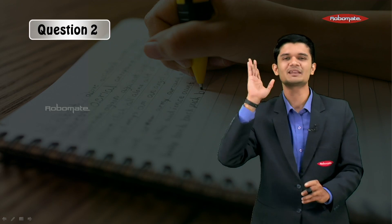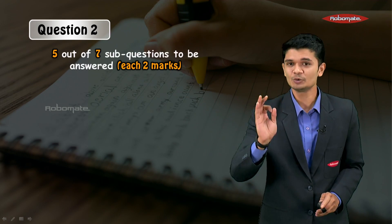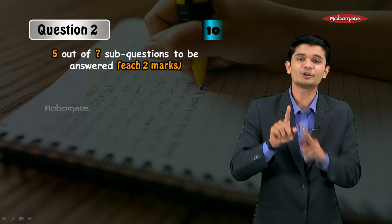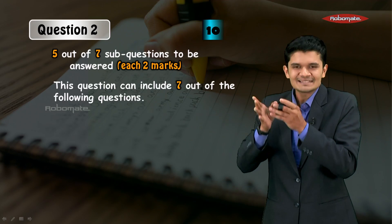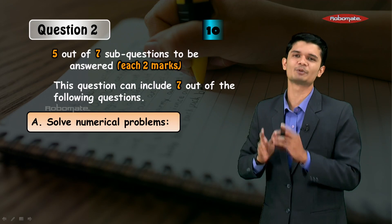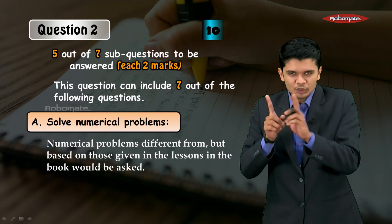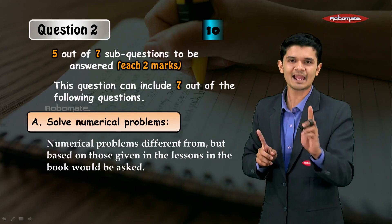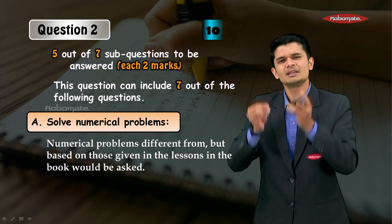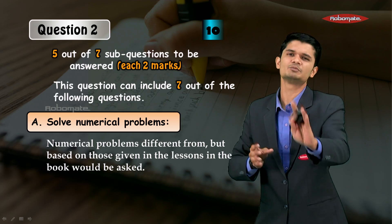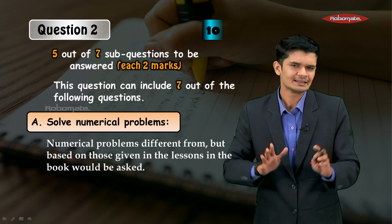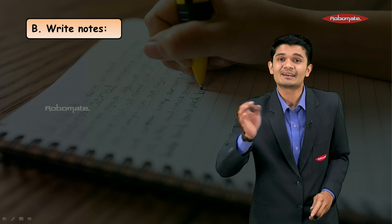Now let's move on to the most scoring questions, starting with Question Number 2. Here you have to answer five out of seven sub-questions, each for two marks, for a total of ten marks. The first type are solve the numerical problems. The numericals you attempt in your exams might be slightly different in values from those in the textbook, but they will be based on the same concept — only the values might slightly differ.